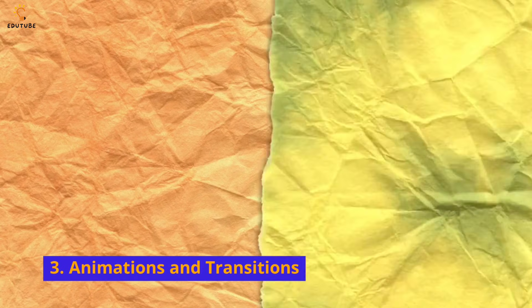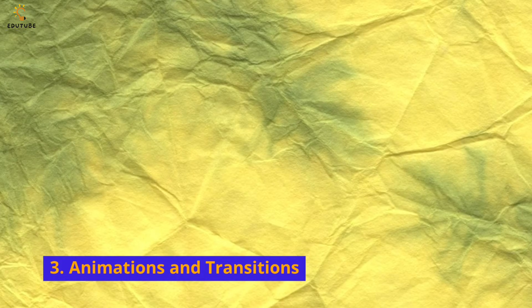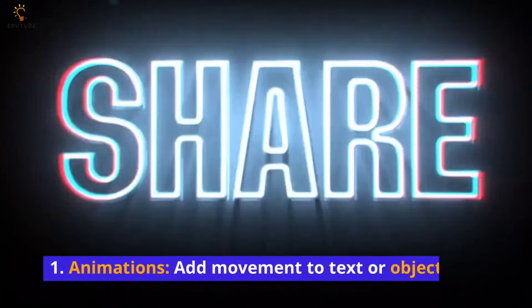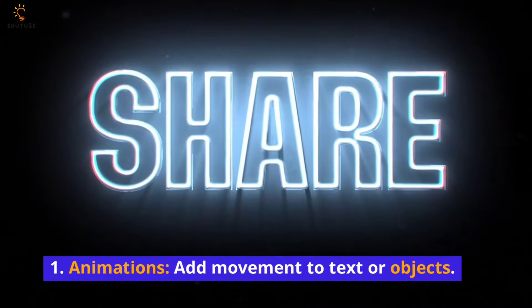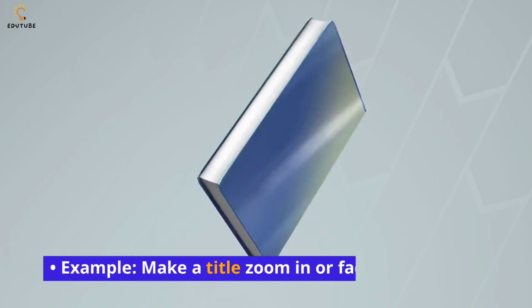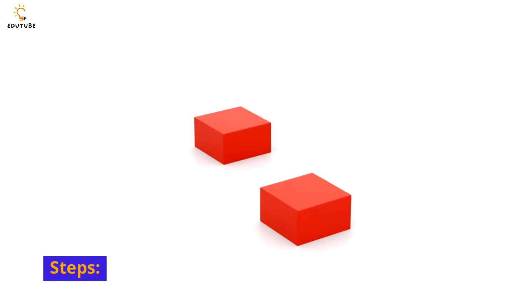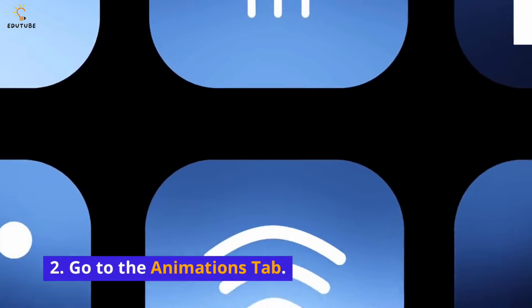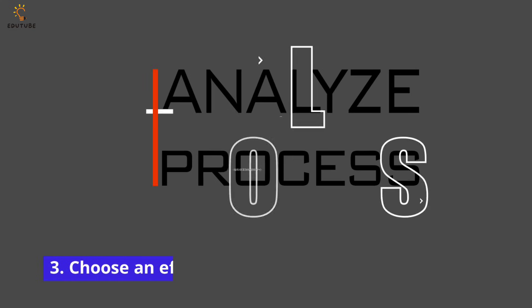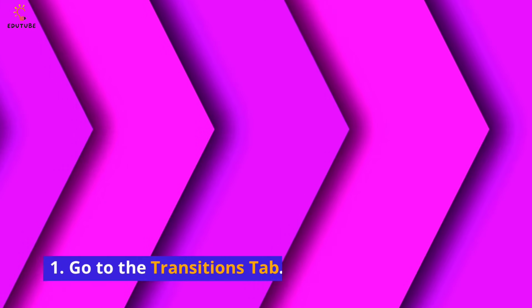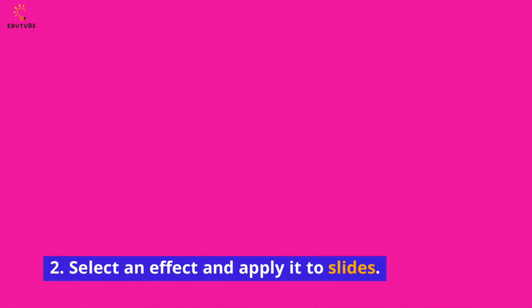Animations and transitions: Animations add movement to text or objects — for example, make a title zoom in or fade in. Steps: select the object, go to the Animations tab, and choose an effect. For transitions, go to the Transitions tab, select an effect, and apply it to slides.